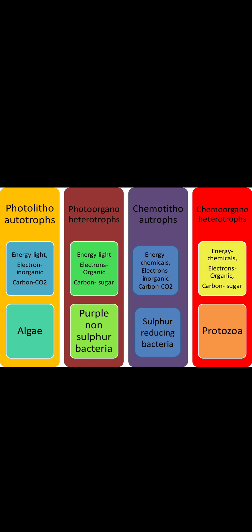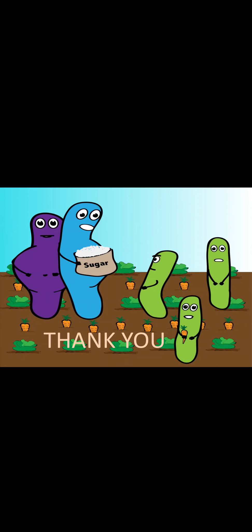To summarize, the four classifications based on nutrients are: photo-litho-autotrophs (or photo-autotrophs), photo-organo-heterotrophs (or photo-heterotrophs), chemo-litho-autotrophs (or chemo-autotrophs), and chemo-organo-heterotrophs (or chemo-heterotrophs). These are the nutritional classifications of microorganisms. In the previous class we had classified the different nutrients of organisms. Thank you.